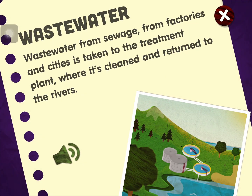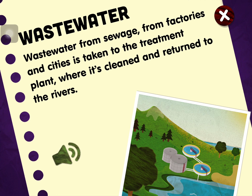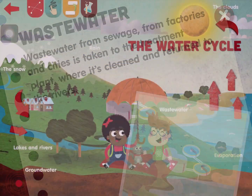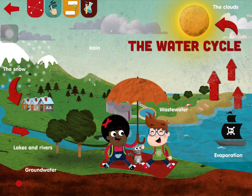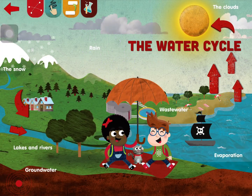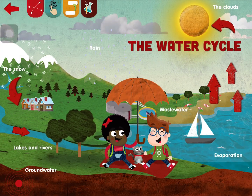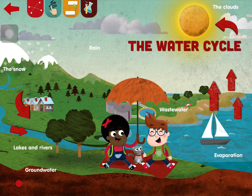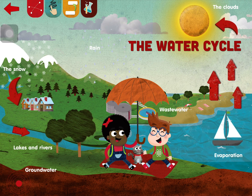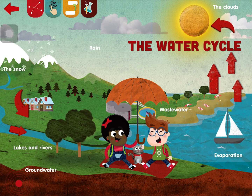Water from sewage from factories and cities is taken to the treatment plant where it's cleaned and returned to the rivers.